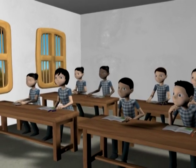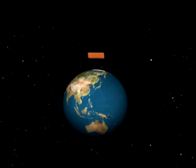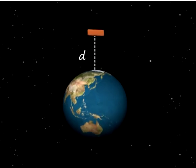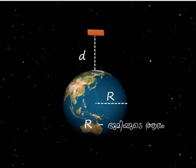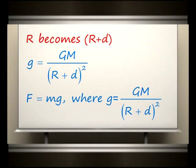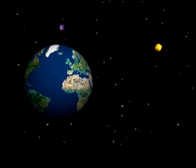If we raise a body to a distance d from the earth's surface, R becomes R + d, so g reduces and therefore F reduces. That is, the weight of the body decreases when it is moved away from the earth's surface. In short, the weight of a body is maximum when it is on the earth's surface, and it decreases when the body is moved outward.